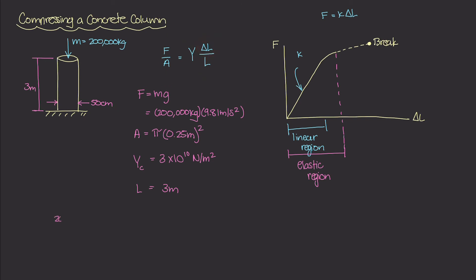So on the left hand side, we have that 200,000 kilograms times 9.81 meters per second squared. And all of that is divided by the area, which was pi times 0.25 meters squared. And this is equal to 3 times 10 to the 10th newton per meter squared, which is Young's modulus, times ΔL, which is our unknown, over 3 meters.